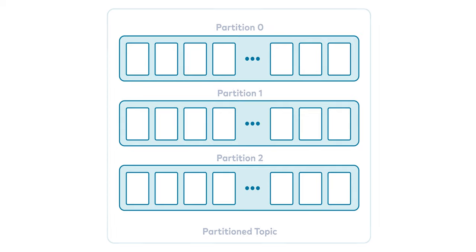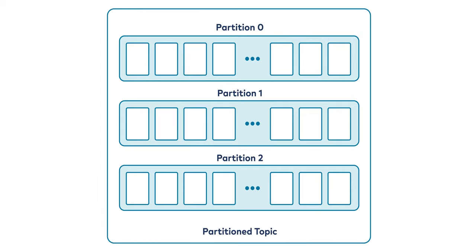Happily, Kafka doesn't leave us without options here. It gives us the ability to partition topics. Partitioning takes the single topic log — remember, a topic is just a log — and breaks it into multiple logs, each of which can live on a separate node in the Kafka cluster. This way, the work of storing messages, writing new messages, reading existing messages — all that kind of stuff — can be split among many nodes in the cluster. You actually get to act like a distributed system.